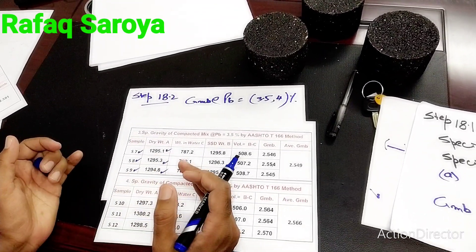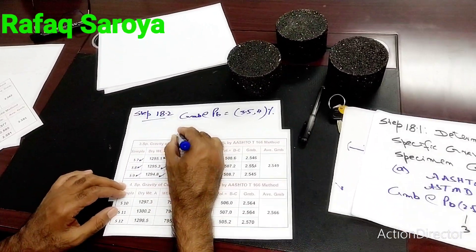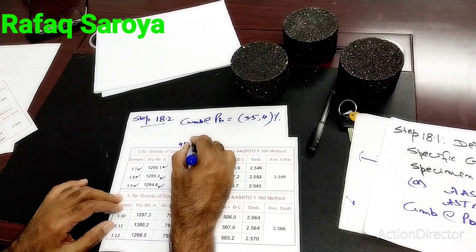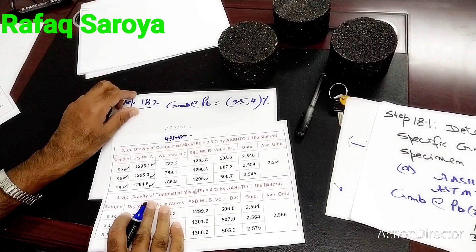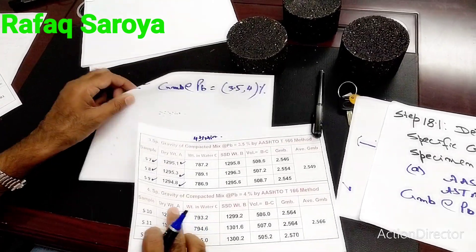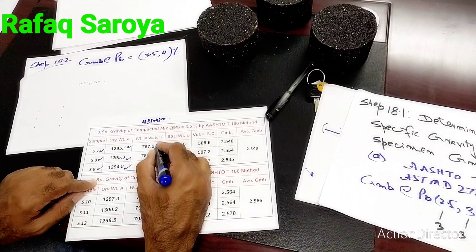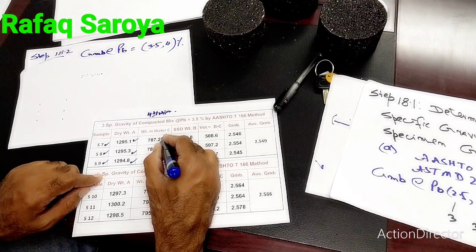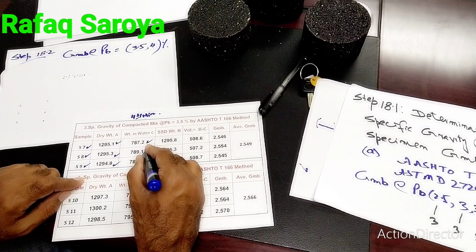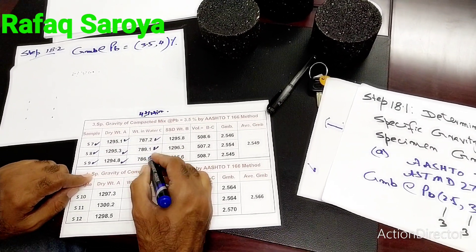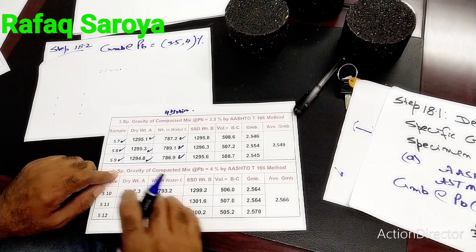What is the next step? We have put all three samples into water for 4 plus or minus 1 minute. After this time has passed, we measure their weight in water. For the first sample 787.2, for the second sample 789.1, and for the third sample 786.9.